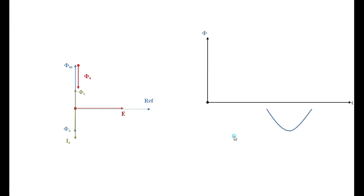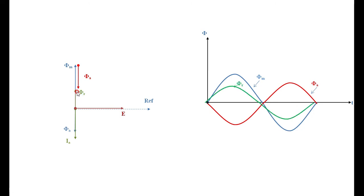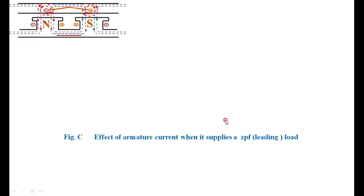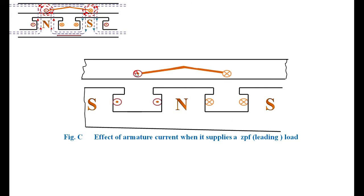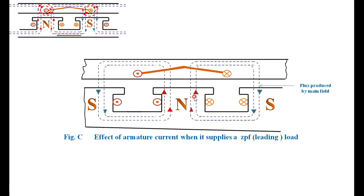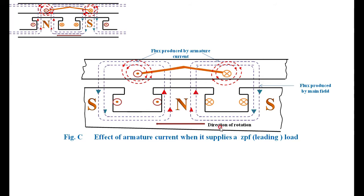For lagging power factor, the armature flux opposes the main flux, giving a reduced resultant flux. When it comes to a leading load — where the current leads the voltage by 90 degrees — the armature flux aids the main magnetic field, causing a strengthening of the field. So the armature reaction affects the magnitude of the main magnetic field for lagging and leading loads, and has a cross-magnetizing effect for resistive loads.